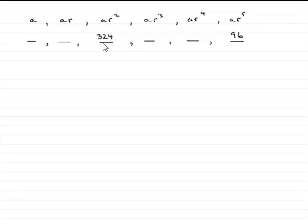And we're told that the third term is 324, and we're also told that the sixth term is 96. And our job then is to find out what the common ratio is.